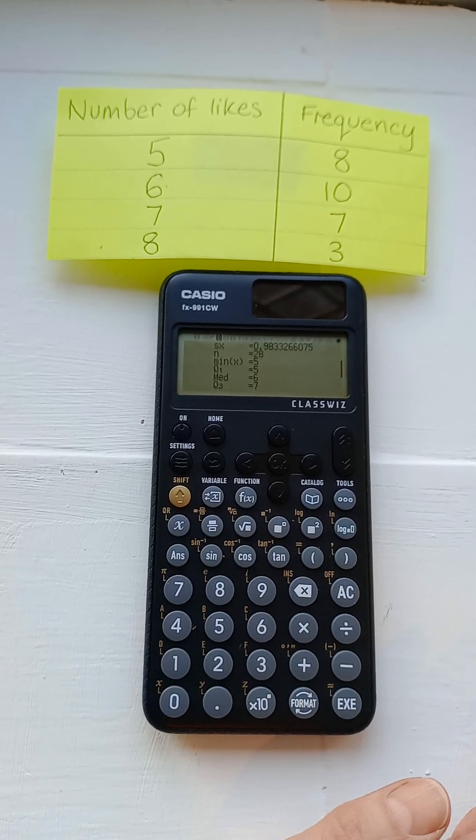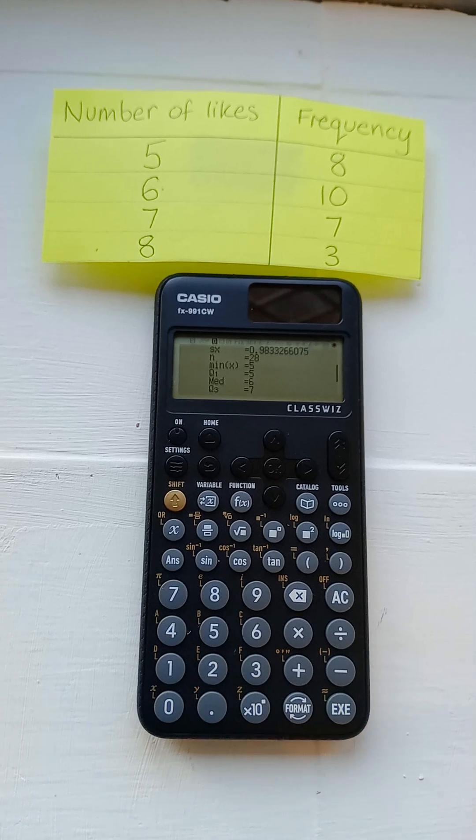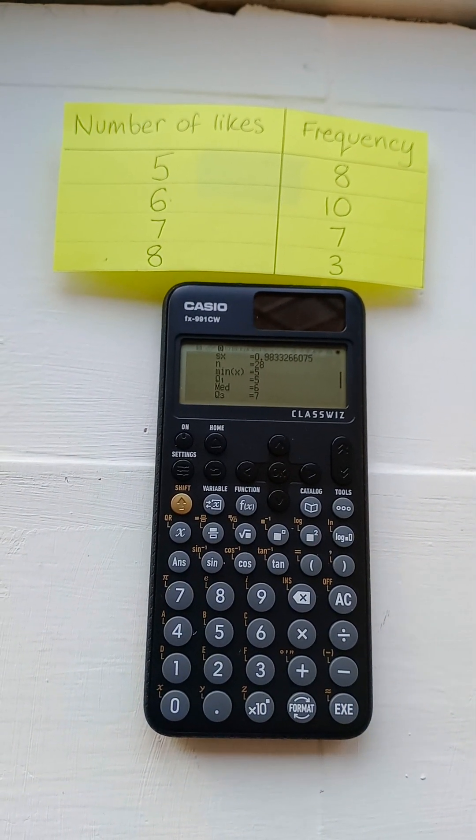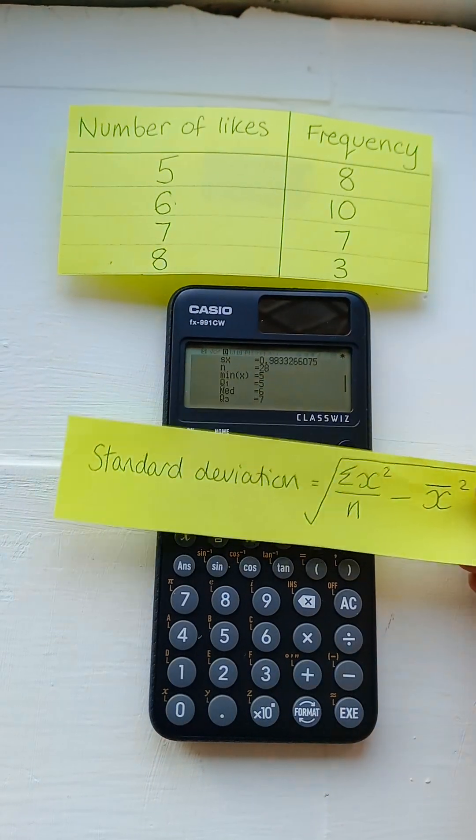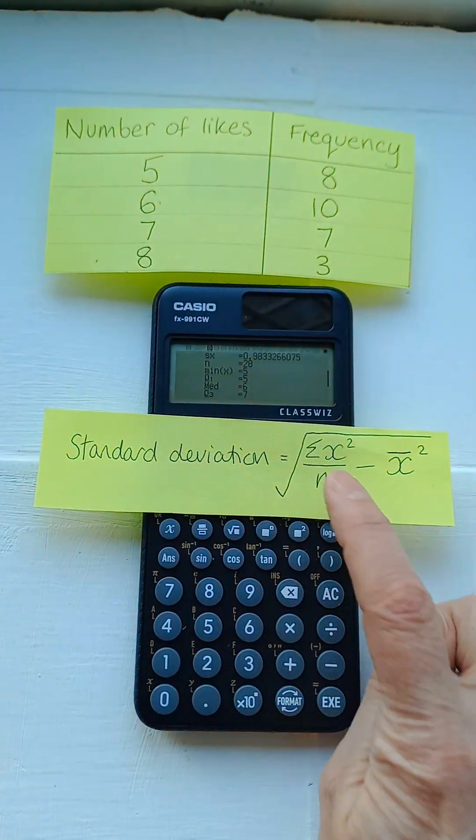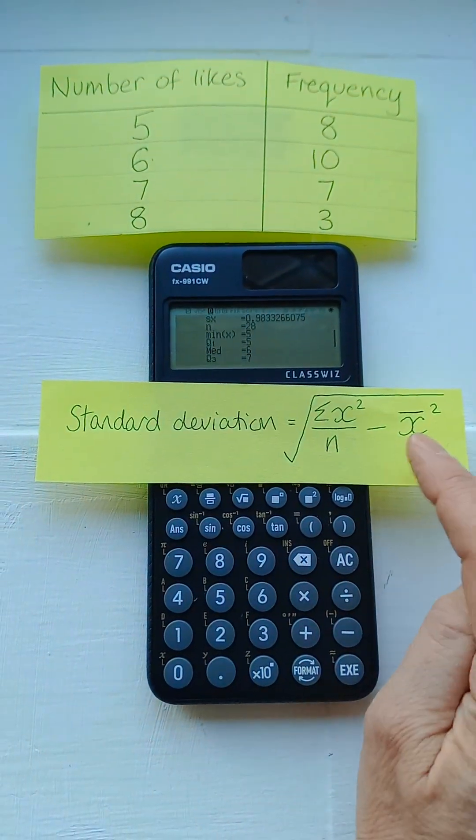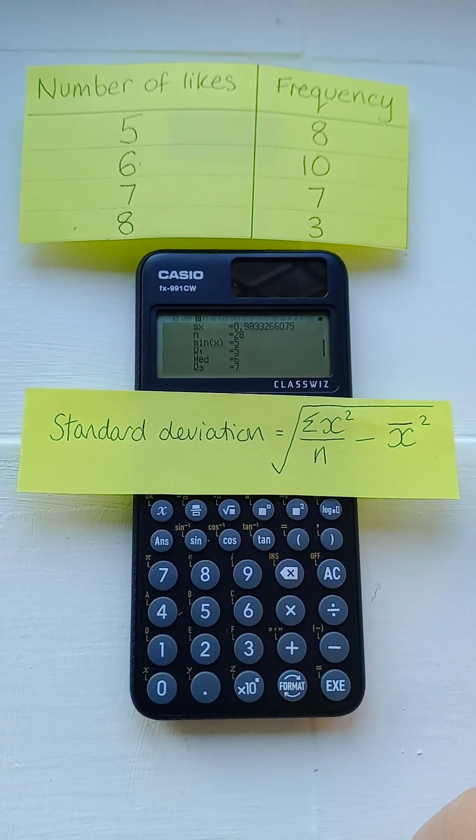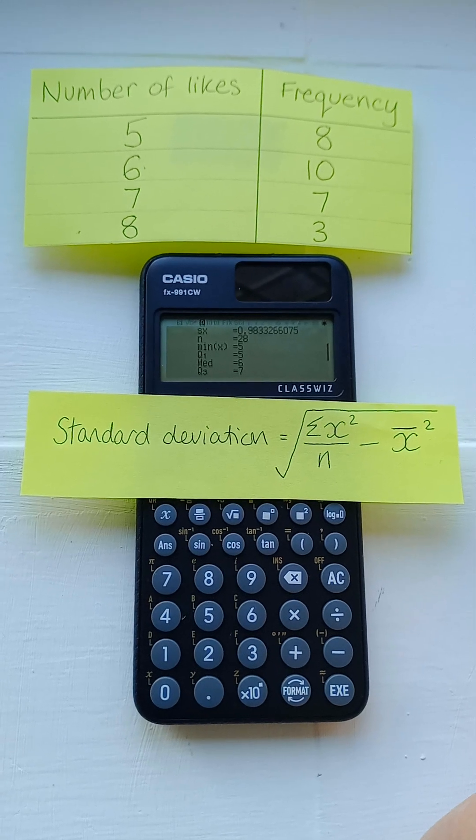And Q3 is the upper quartile. Also, if you want to show you're working, you can use sigma X squared from the list and N from the list to put them into this equation and show how you've got the standard deviation.